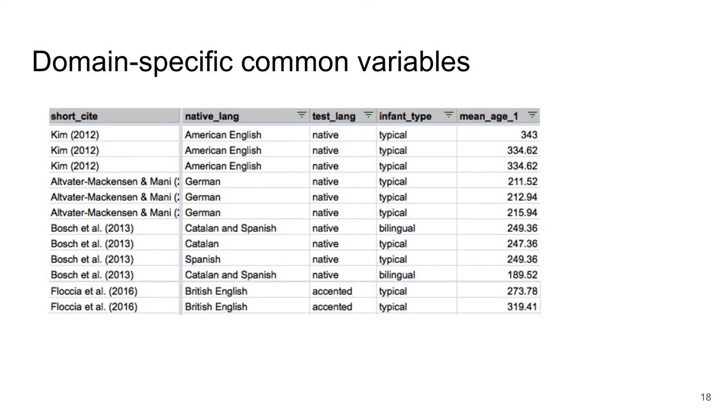Infant type refers to the group of infants. We consider in language acquisition full term monolingual infants with no history of delays and disorders to be typical. So we note everything that is different from this type of infants.